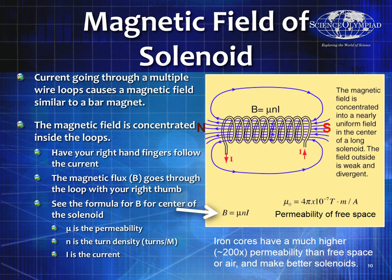We follow the right-hand rule. If you know which way the current is going, you follow the current around just like you did in the loop, and your thumb will point to the north direction. That way you can draw it the same way you draw any type of magnet. These can be incredibly powerful magnets. B is equal to mu times n, being the number of turns, times current.